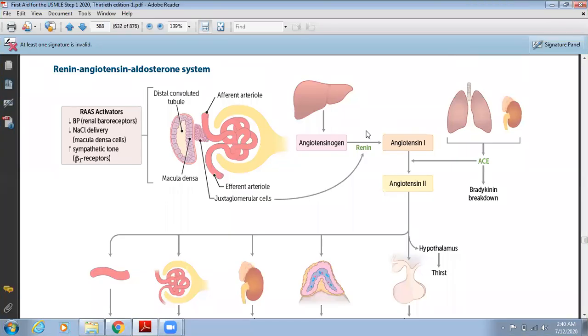Assalamu alaikum. The topic is about the renin-angiotensin-aldosterone system. This system activates in case of shock, hemorrhage, or decreased blood supply. We have different activators for the renin-angiotensin-aldosterone system.